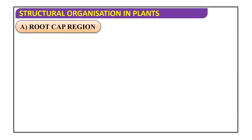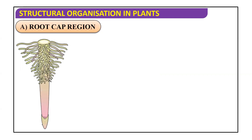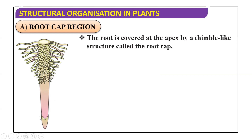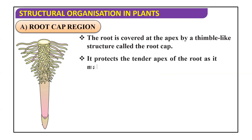The first one is root cap region. In every root we have a root cap. It is present at the apex — you can see this, this is the root cap. The root is covered at the apex by a thimble-like structure, which we call the root cap. It protects the tender apex of the root as it makes its way through the soil.